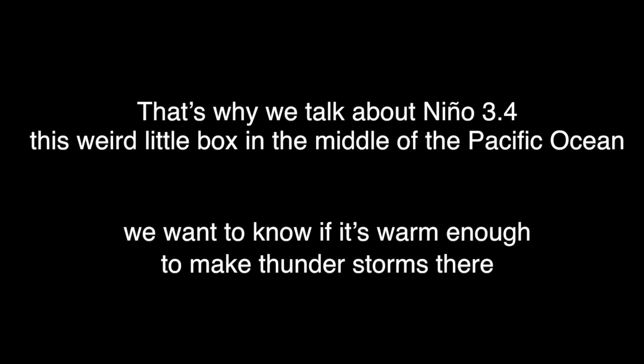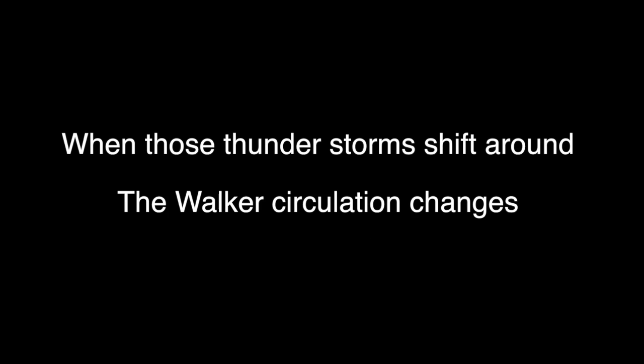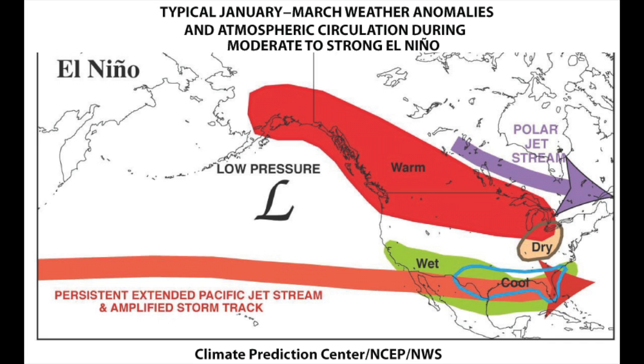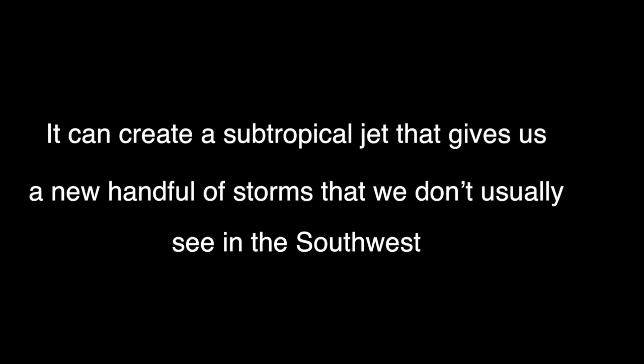That's the key. That's why we talk about the Niño 3.4 region — this box in the middle of the Pacific Ocean. We want to know if it's going to get warm enough, crossing that threshold of 27.5 to 28 degrees, to make thunderstorms in that area. When those thunderstorms shift, the Walker circulation changes, and that has implications for the jet stream in both hemispheres. In wintertime, that disruption typically enhances the subtropical jet, which can give us a whole new set of storms in the southwest.